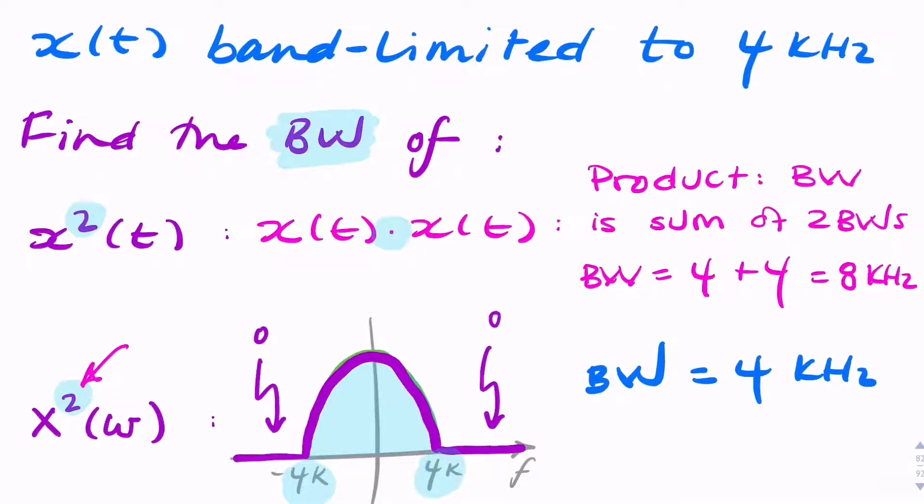But I just wanted to show you that squaring a signal in the time domain and squaring the spectrum gives you a different bandwidth. Because as we know, multiplying in the time domain is not the same as multiplication in the frequency domain. Remember the convolution theorem.